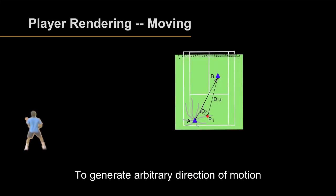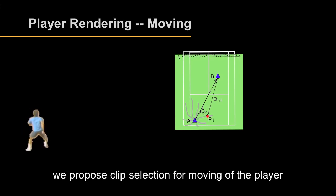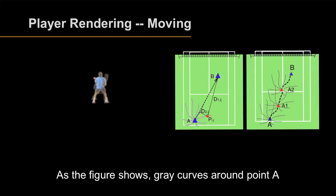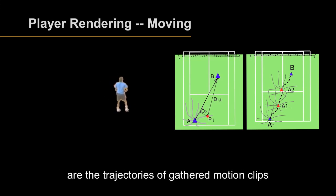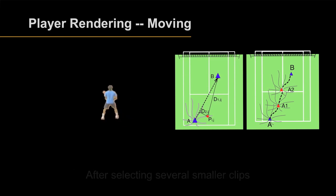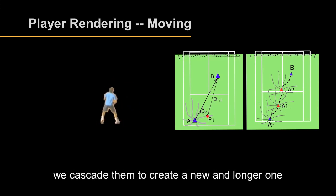To generate arbitrary directions of motion, we propose clip selection for moving the player. As the figure shows, the gray curves around point A are the trajectories of gathered motion clips and the possible moving directions of the player. After selecting several smaller clips, we cascade them to create a new and longer motion sequence.